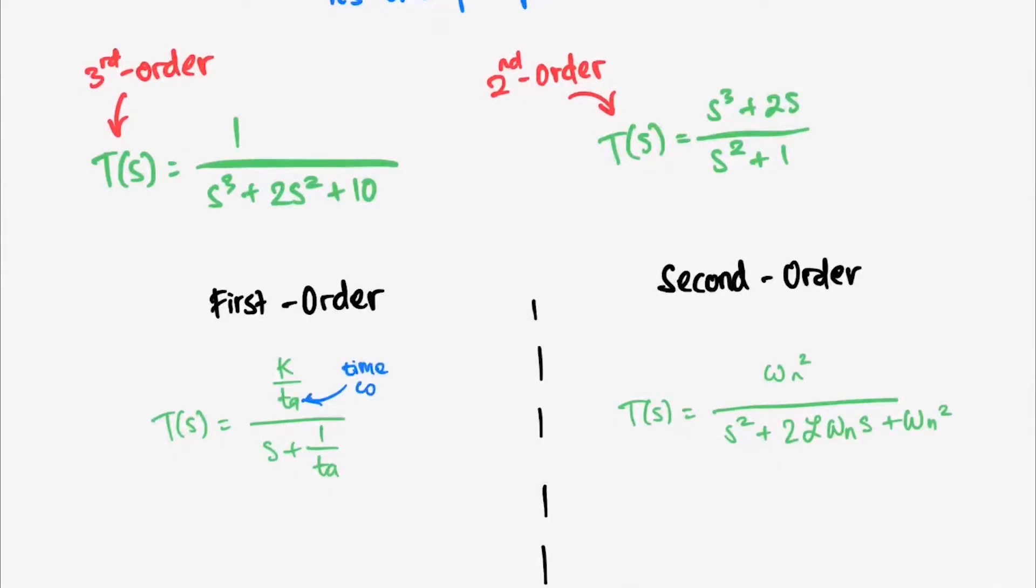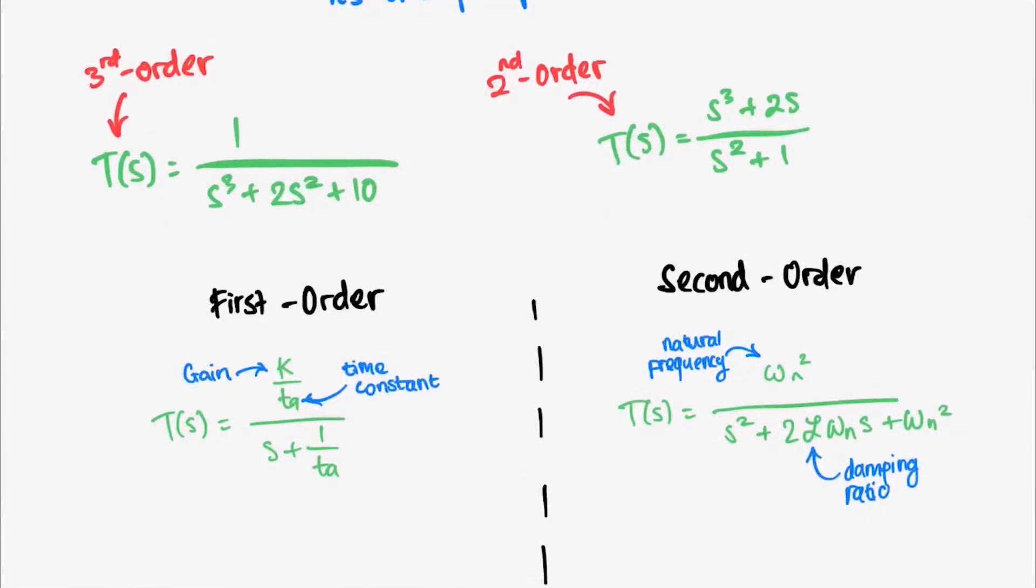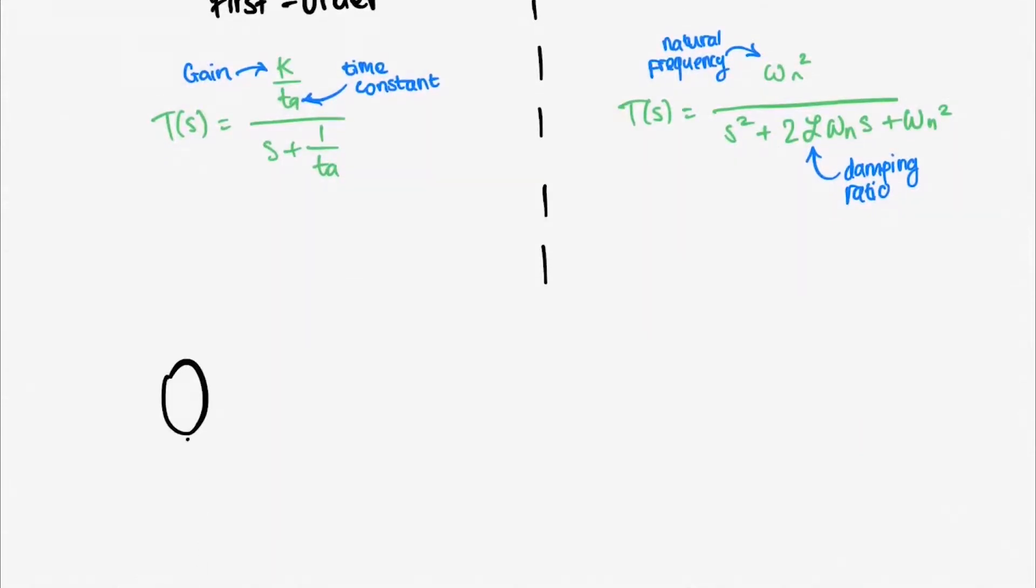For first order system, TA is the time constant. And for second order system, Omega N is natural frequency, and Zeta is the damping ratio. And K is called the gain of the system.